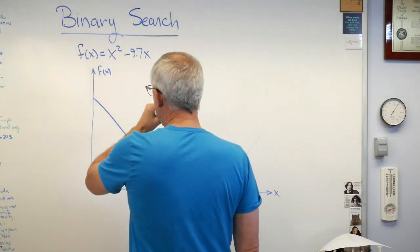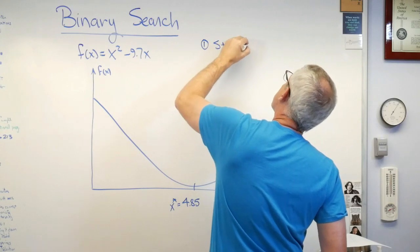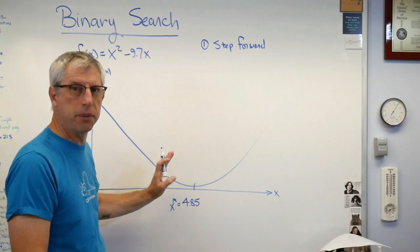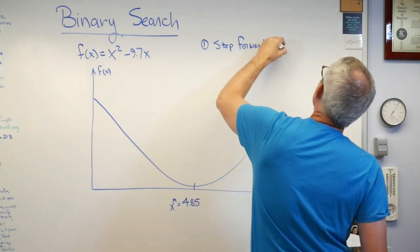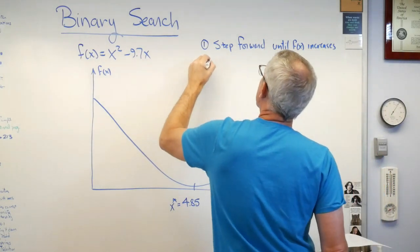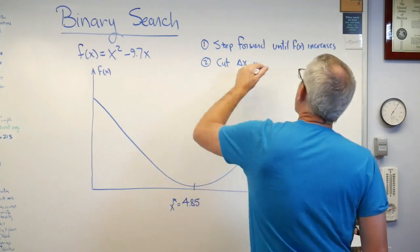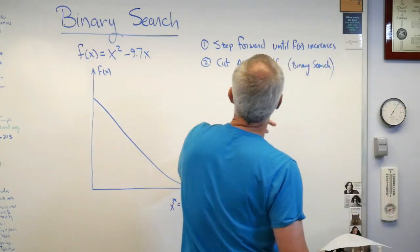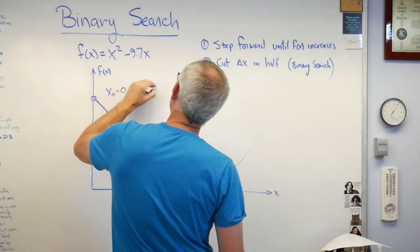We're going to start. We need to pick a delta x. Our first step is we're going to step forward and find an approximate minimum. I'm going to step forward in big steps until the function starts to increase again. Once it increases, we're going to stop, then cut delta x in half. This is the binary search — it got the name binary because we're cutting it in half, dividing by two. I'm going to set x0 = 0 and start with delta x = 1.